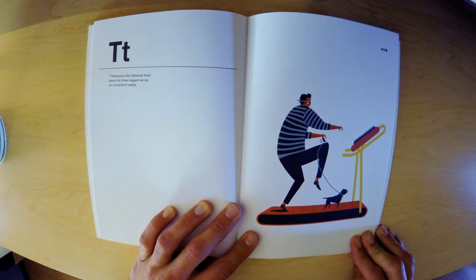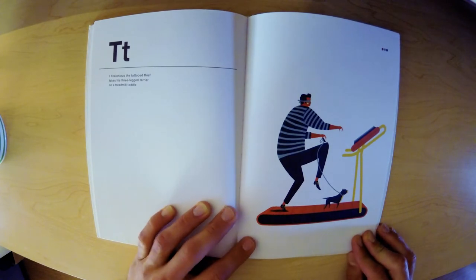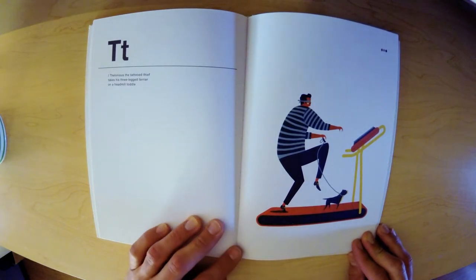T. Thelonious the tattooed thief takes his three-legged terrier on a treadmill toddle.